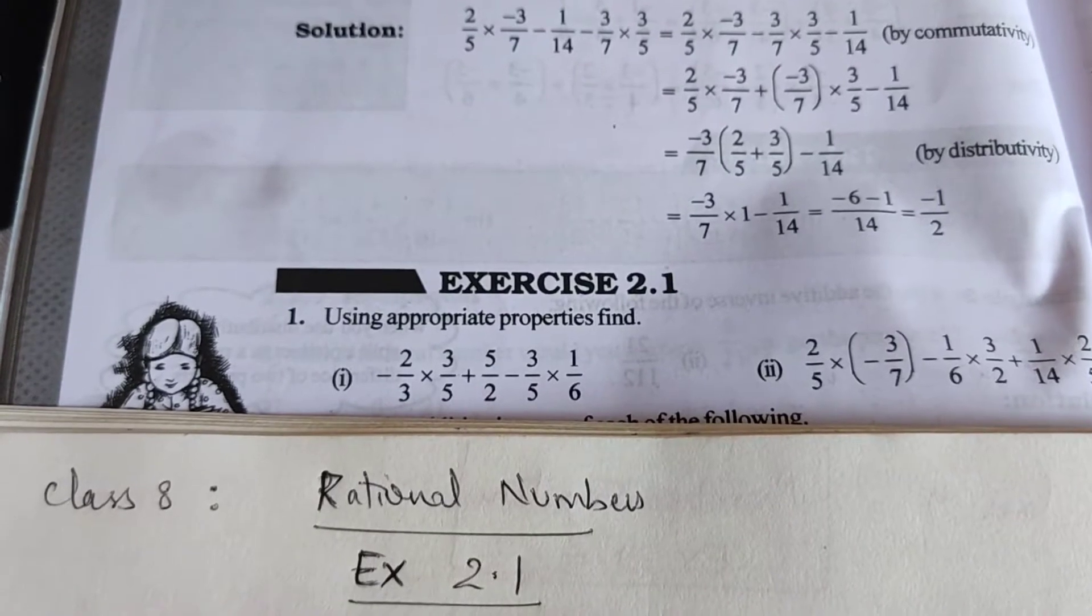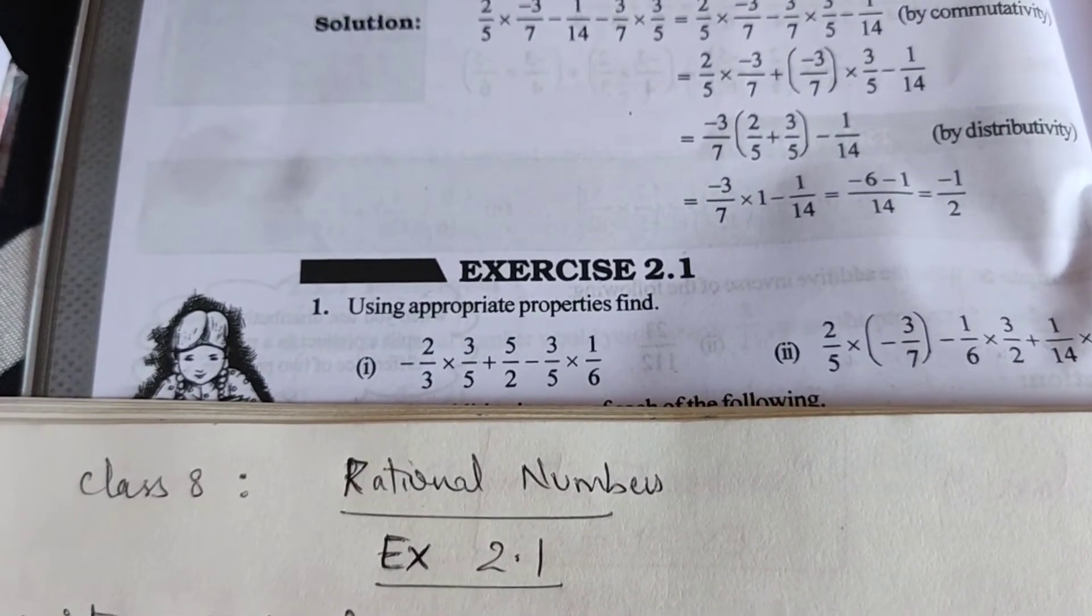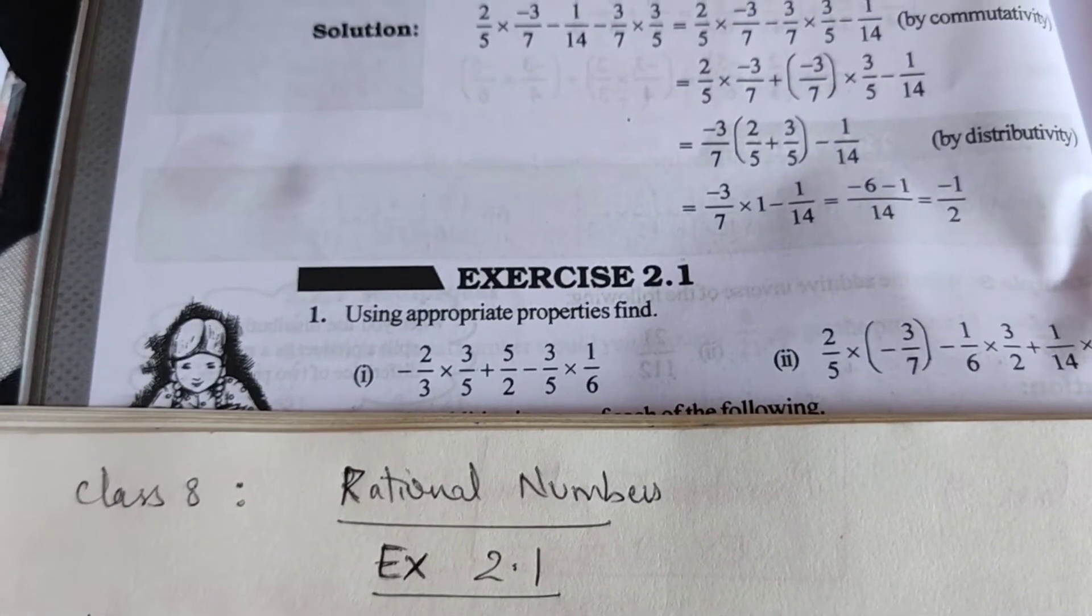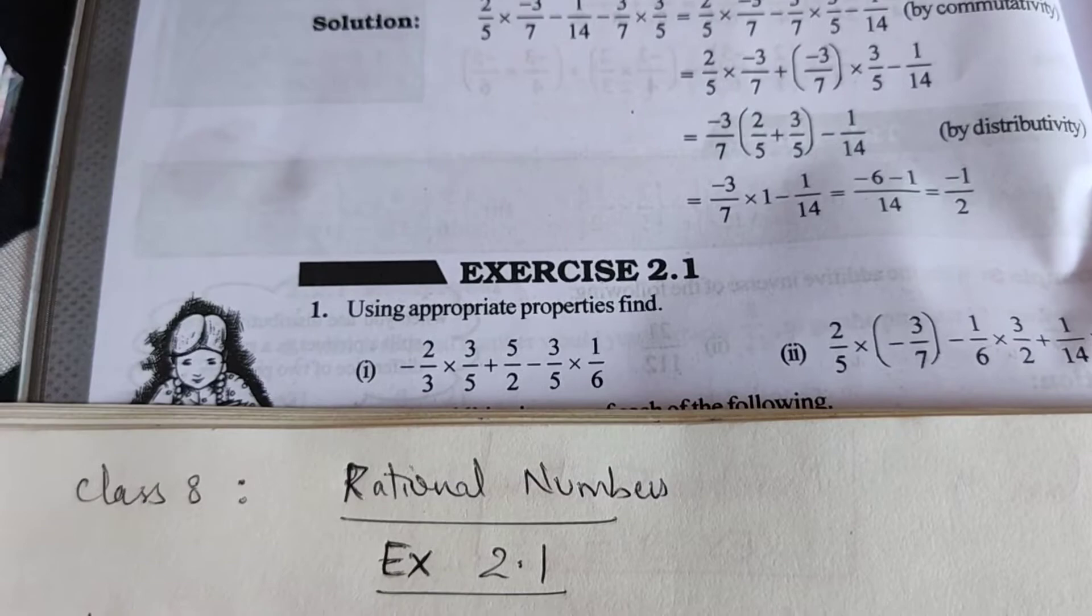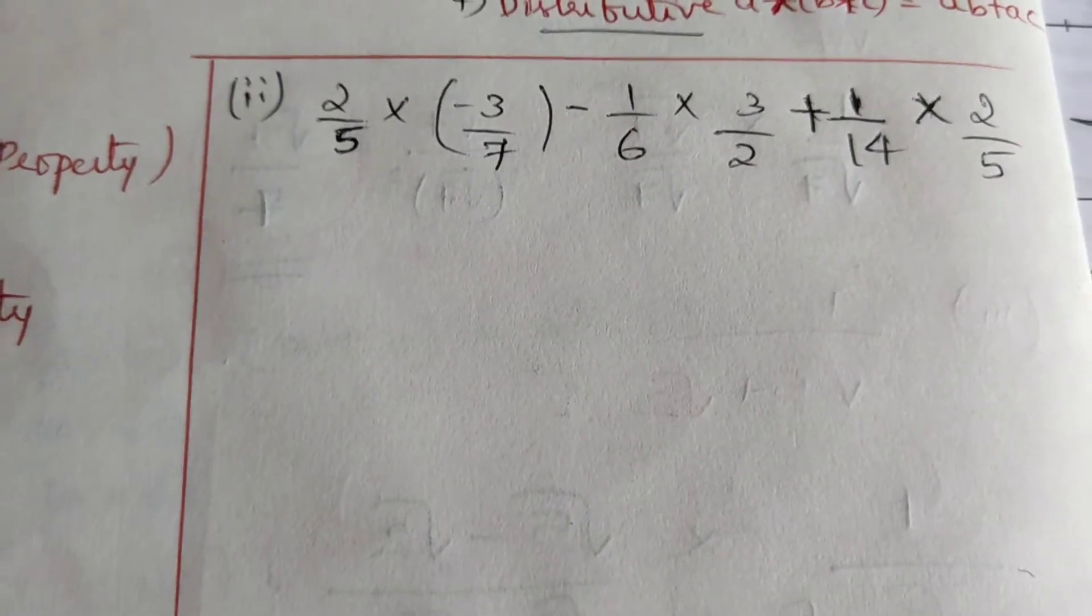Hello everyone, today we are going to solve question 1 second problem from exercise 2.1. In my previous video I have solved the first problem, so let us solve the second problem: 2/5 × (-3/7) - 1/6 × 3/2 + 1/14 × 2/5.